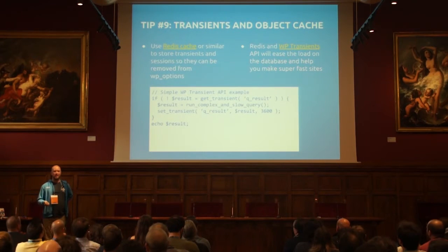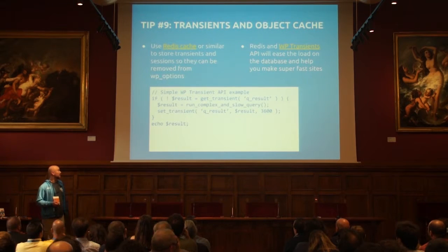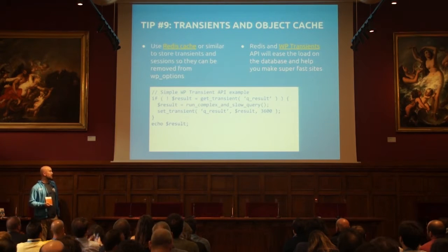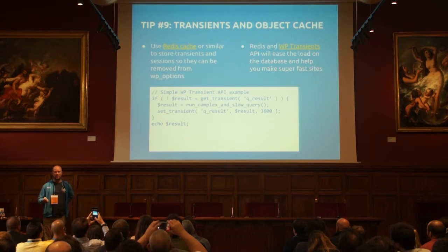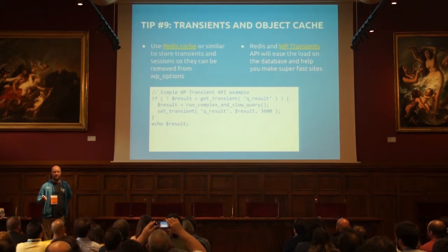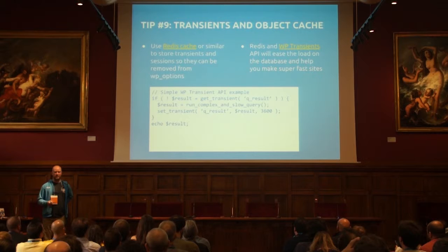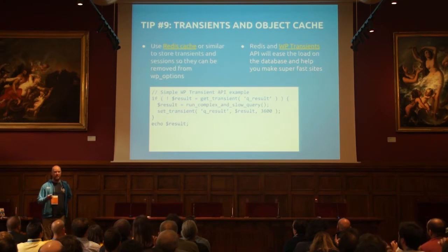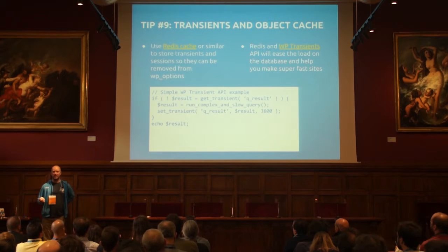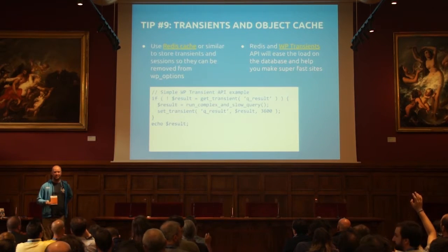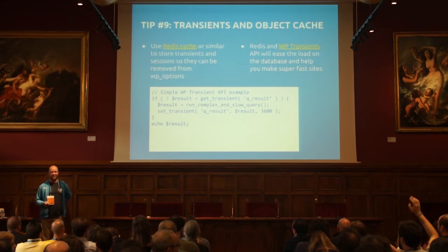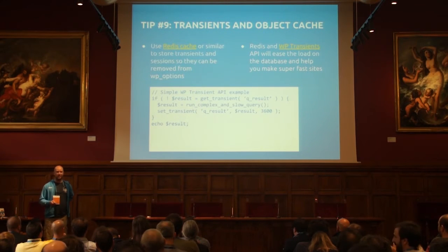Sometimes you shouldn't use the database at all. Here is a quick example of how to use transients. Transients enable you to store the result of complex queries in a single database row. Or if you have Redis or something similar installed, it will be stored in memory and will be super fast. How many of you have heard about the Transient API in WordPress? Please check it out — it will make your own code much faster in many occasions.